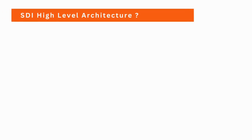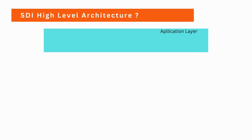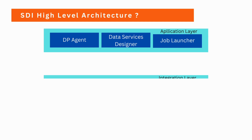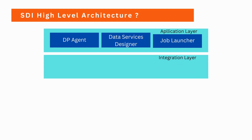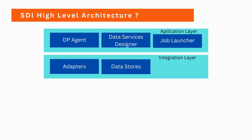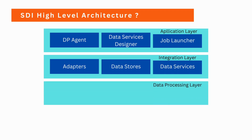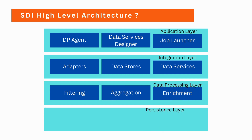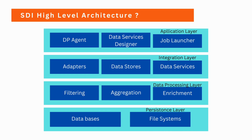Let's now map all the components of Smart Data Integration into different layers. In the Application Layer, we can have the DP Agent, Data Services, and Job Launcher. In the Integration Layer, we could have adapters, data stores, and data services. In the Data Processing Layer, we have filtering, aggregation, and enrichment. In the last layer, which is the Persistence Layer, we have databases and file systems.